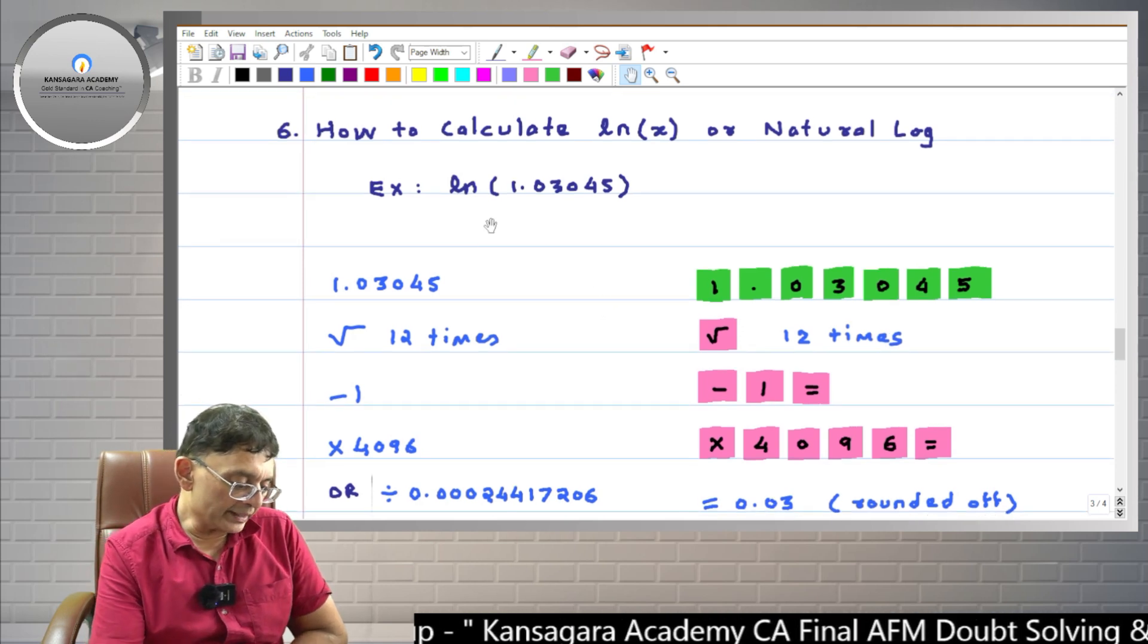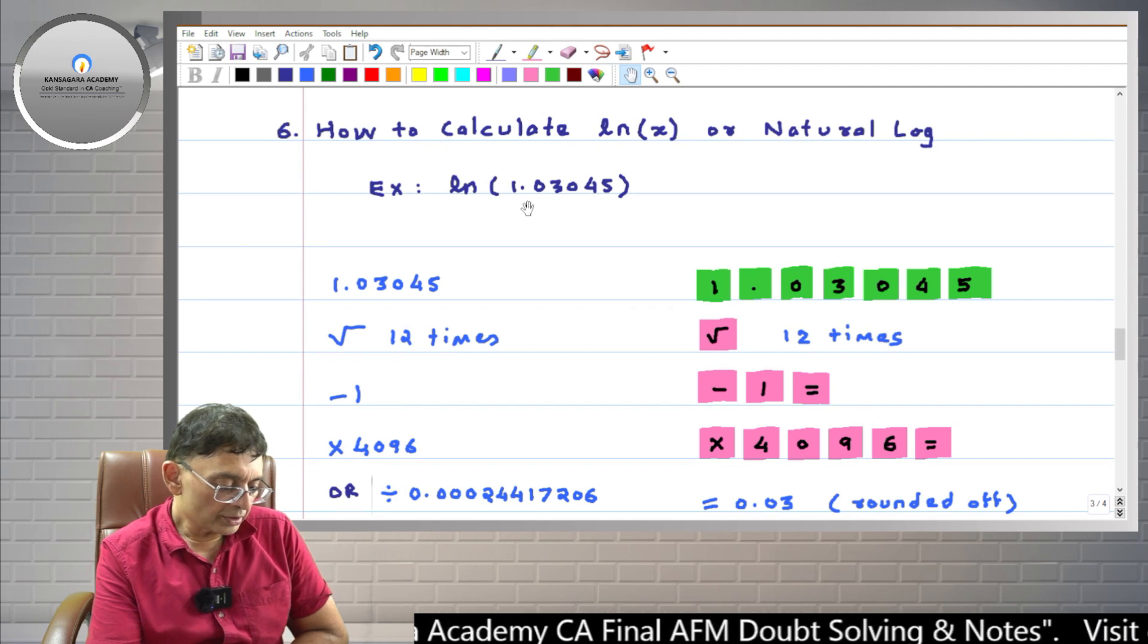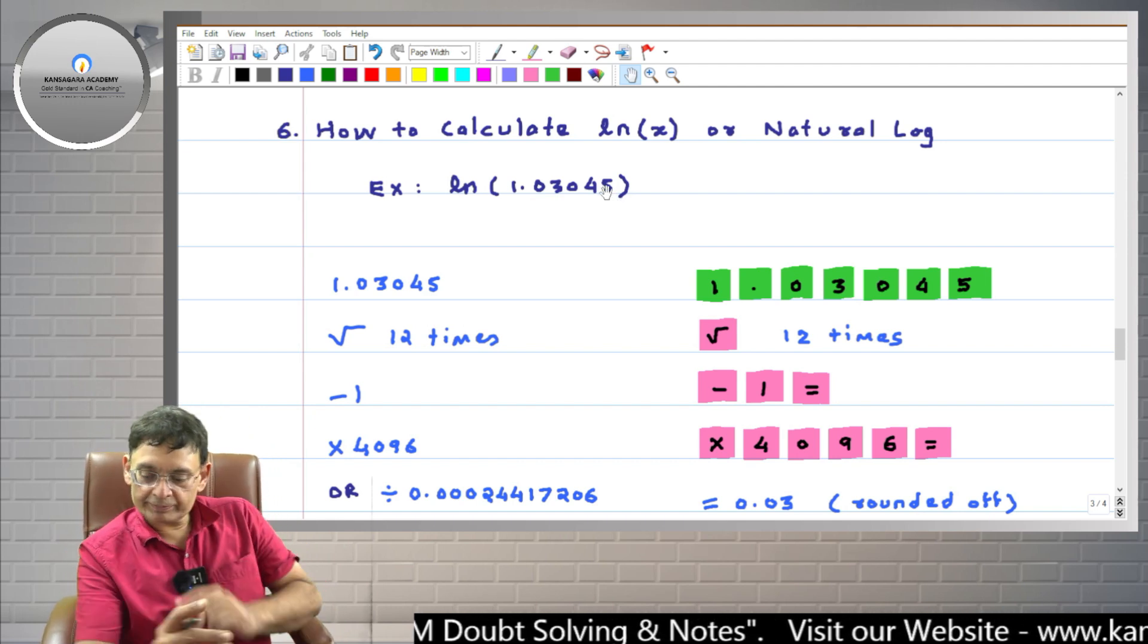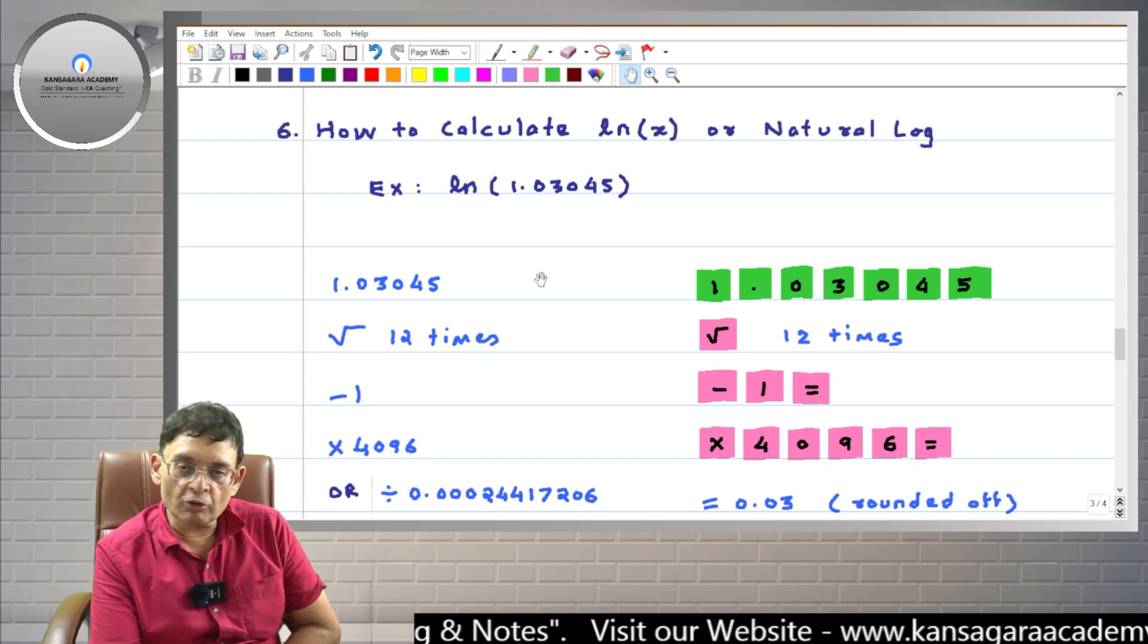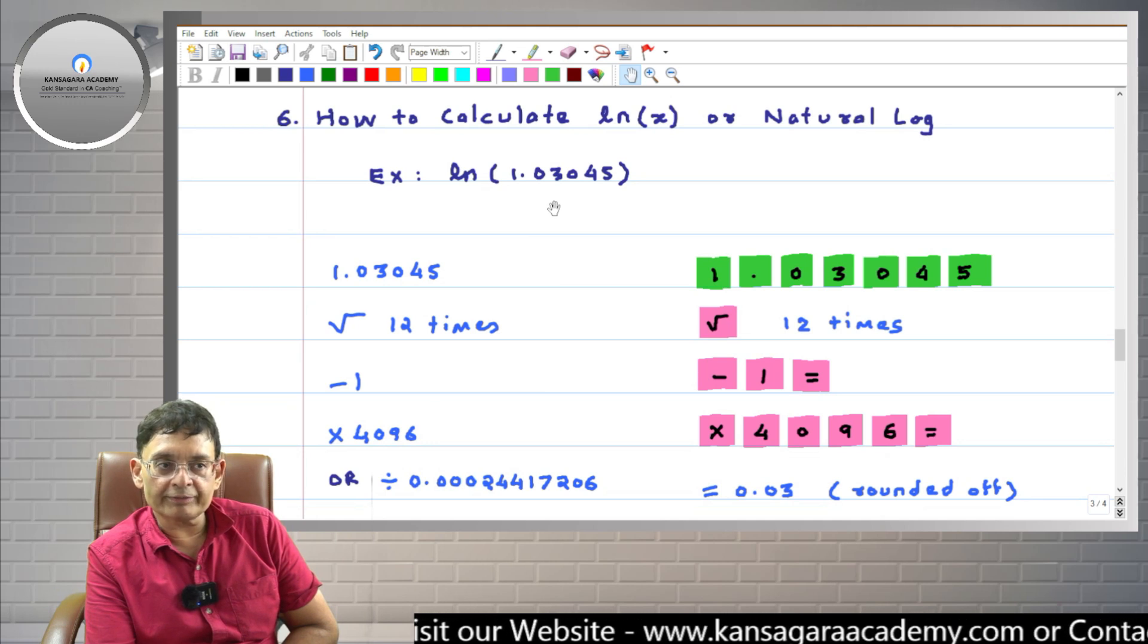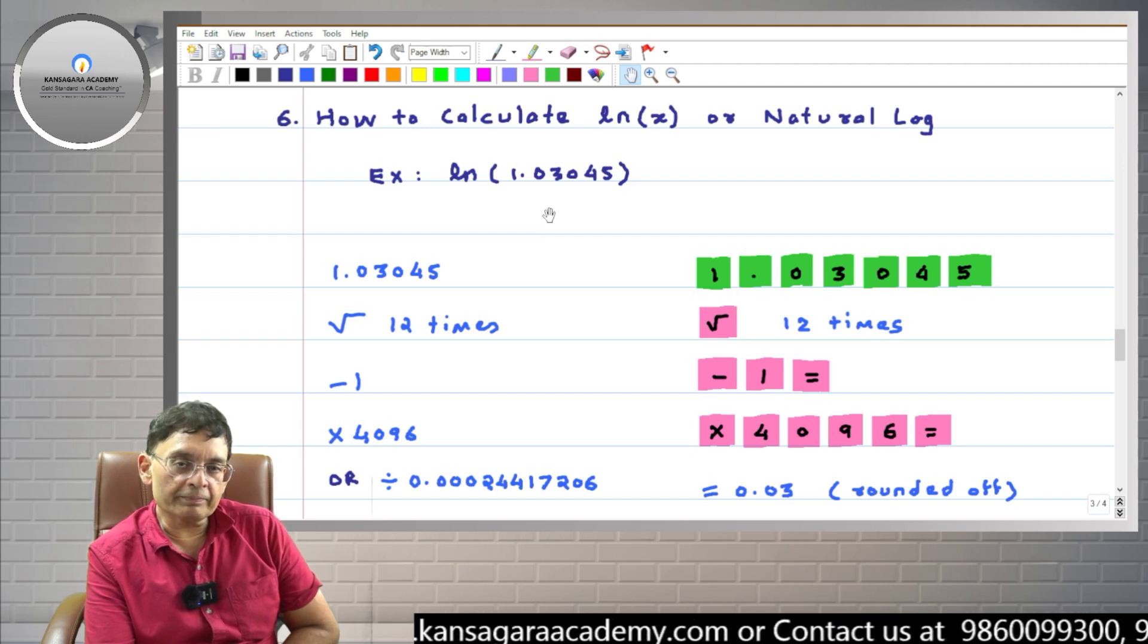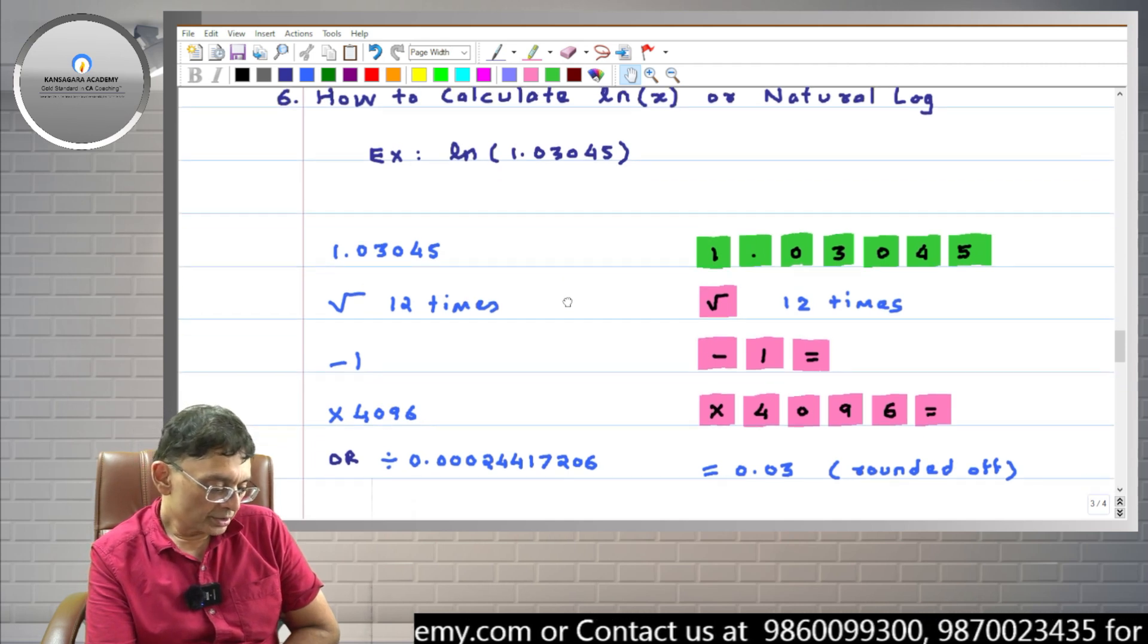Friends, we will take an example. Suppose we want to calculate the natural log of 1.03045. So first take out your calculator, simple calculator and do the process with me. Friends, here if you want to know what the natural logarithm is, then please see that video. We have published it on YouTube in the same series. Natural logarithm and power of E, demystified for CA final students.